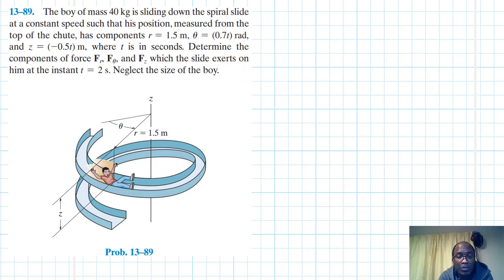This problem is coming from the Engineering Mechanics and Dynamics, 14th edition by R.C. Hibbeler. We have been asked to determine the components of Fr, F theta, and Fz which the slide exerts on the boy at t equal to 2 seconds.